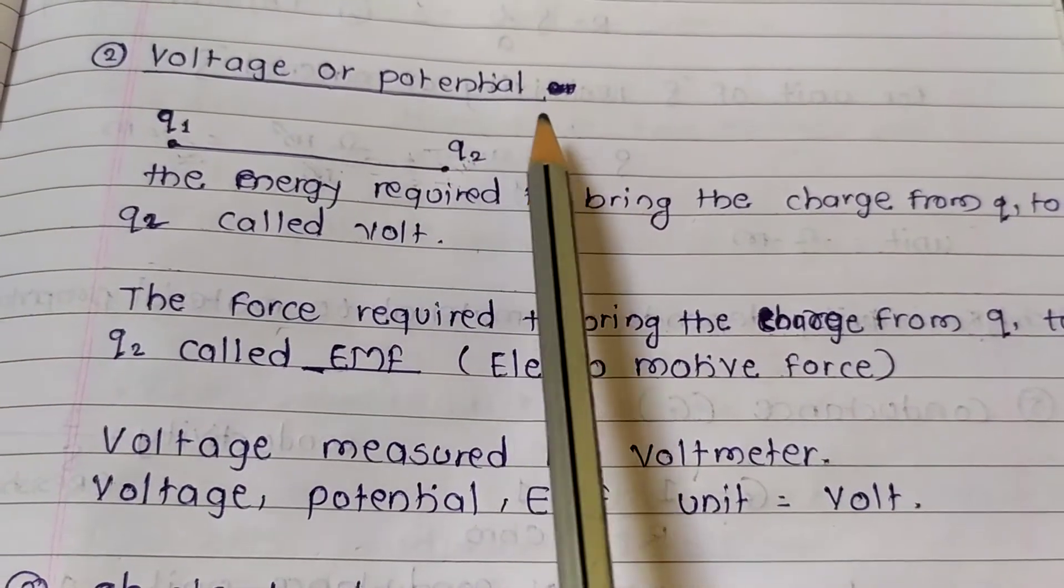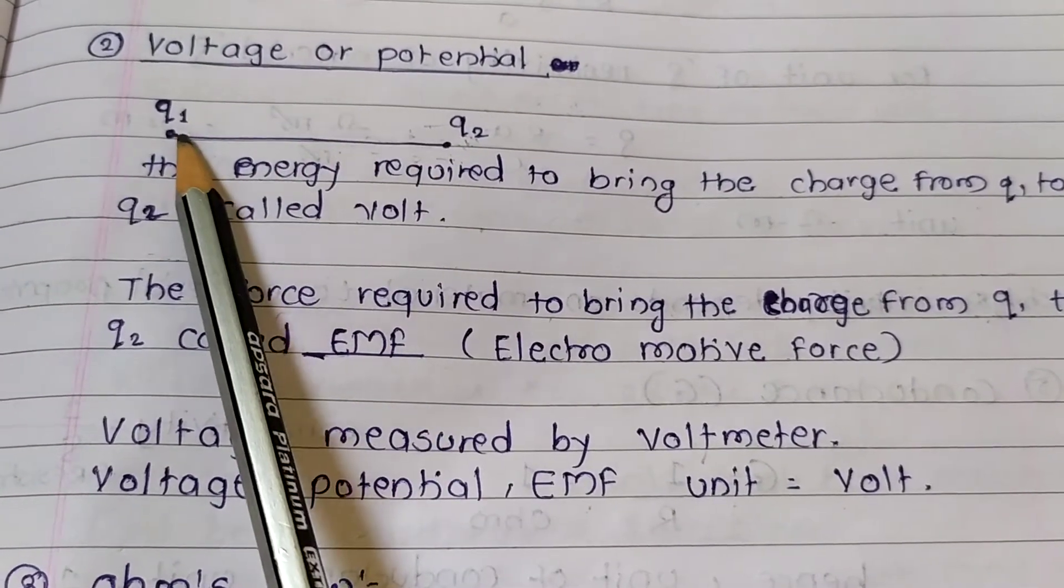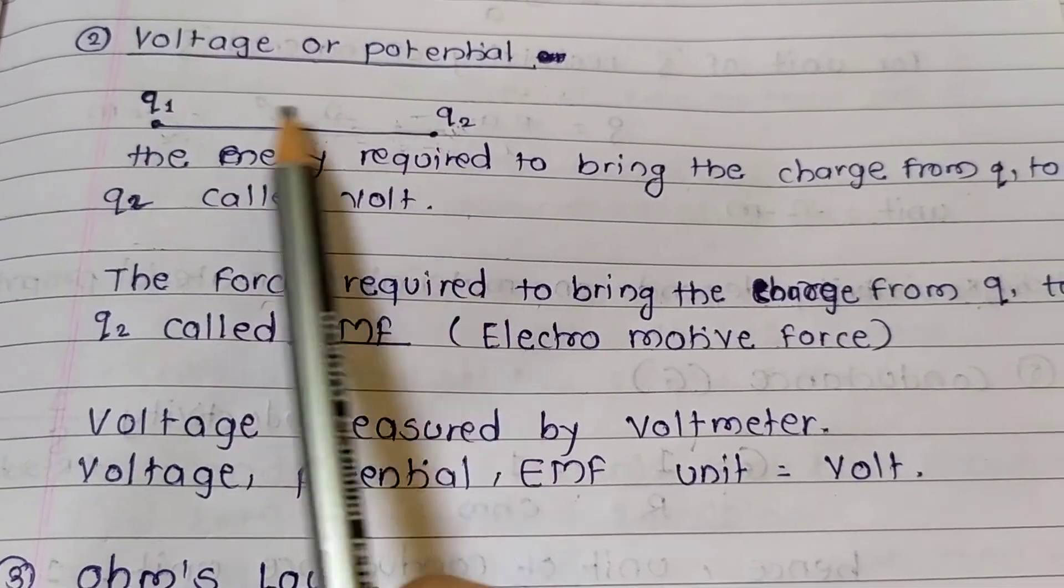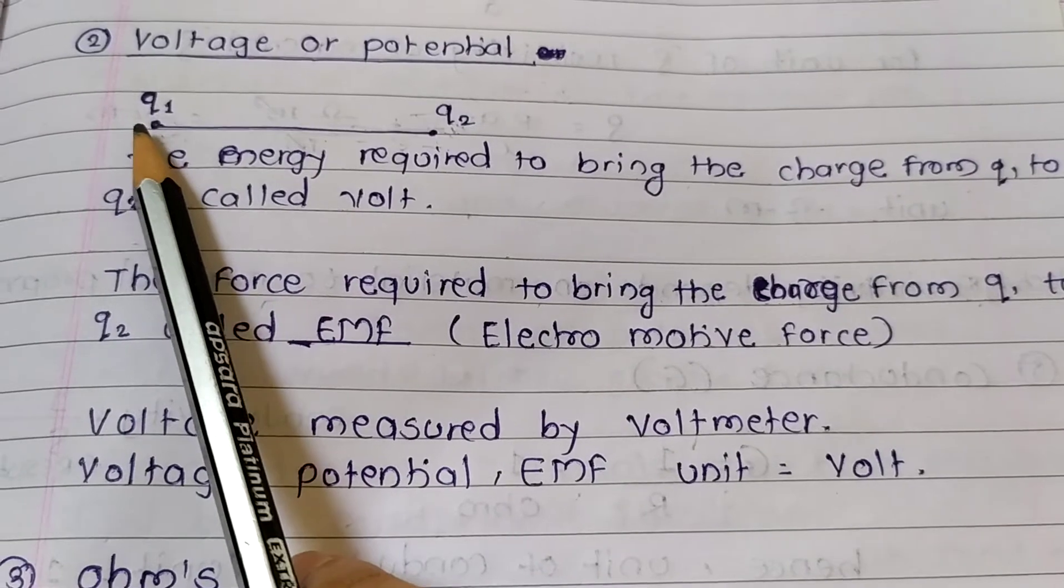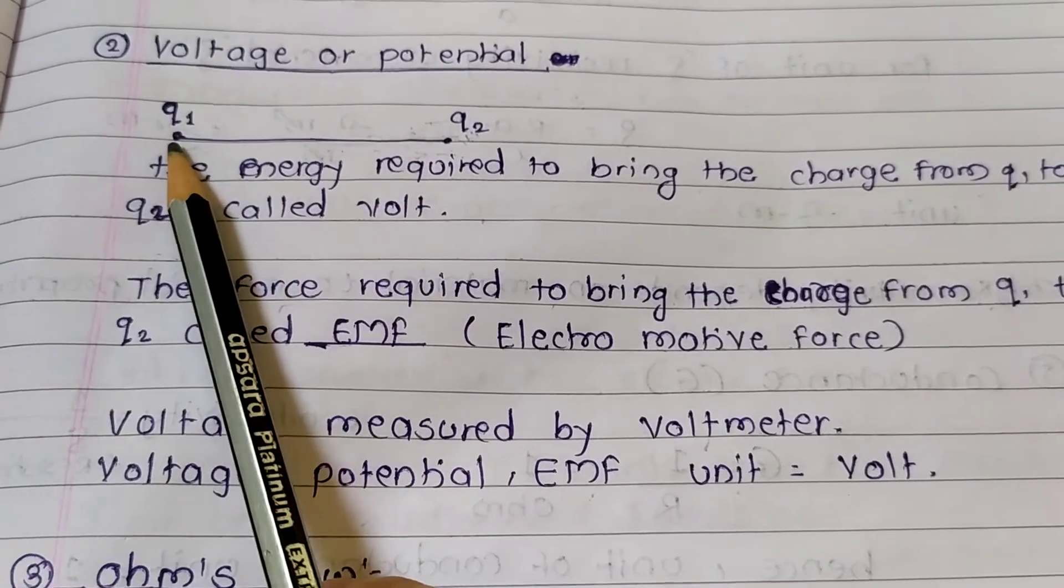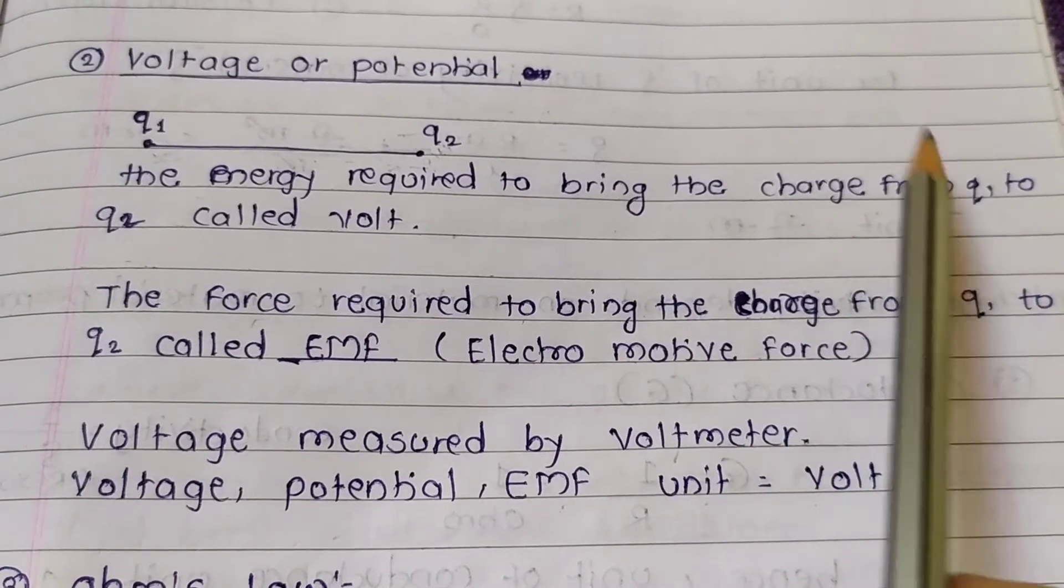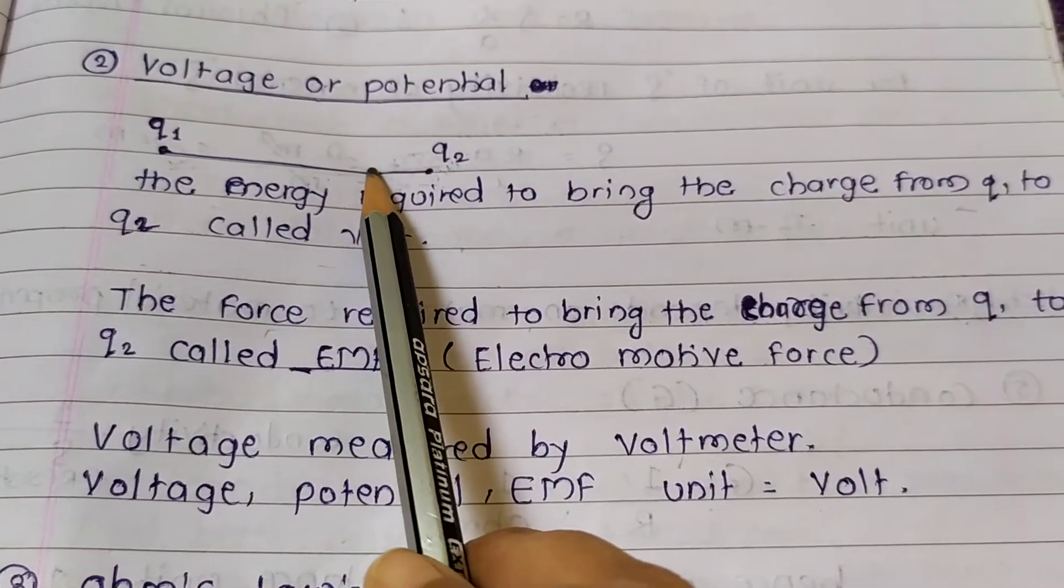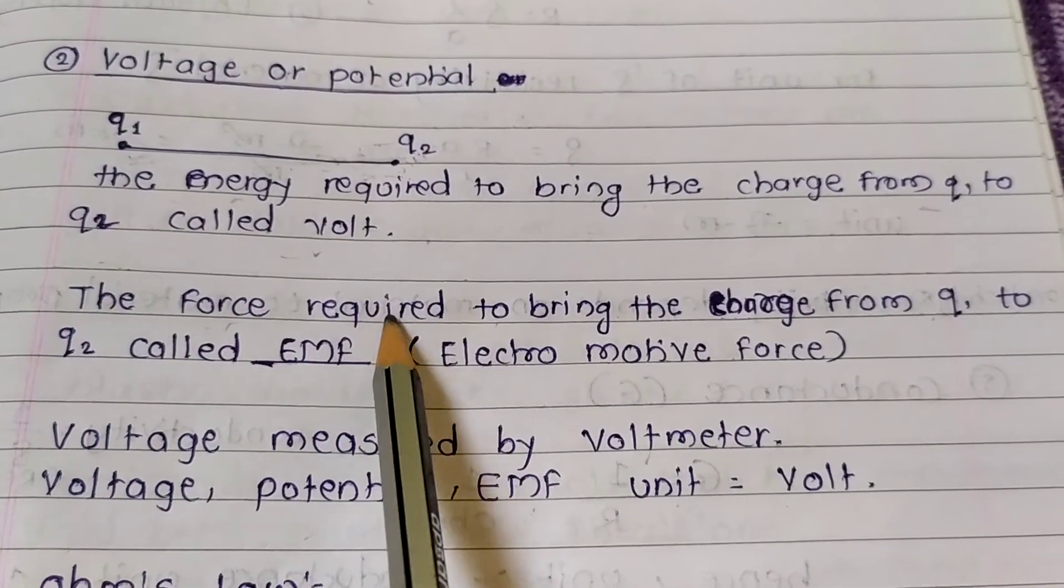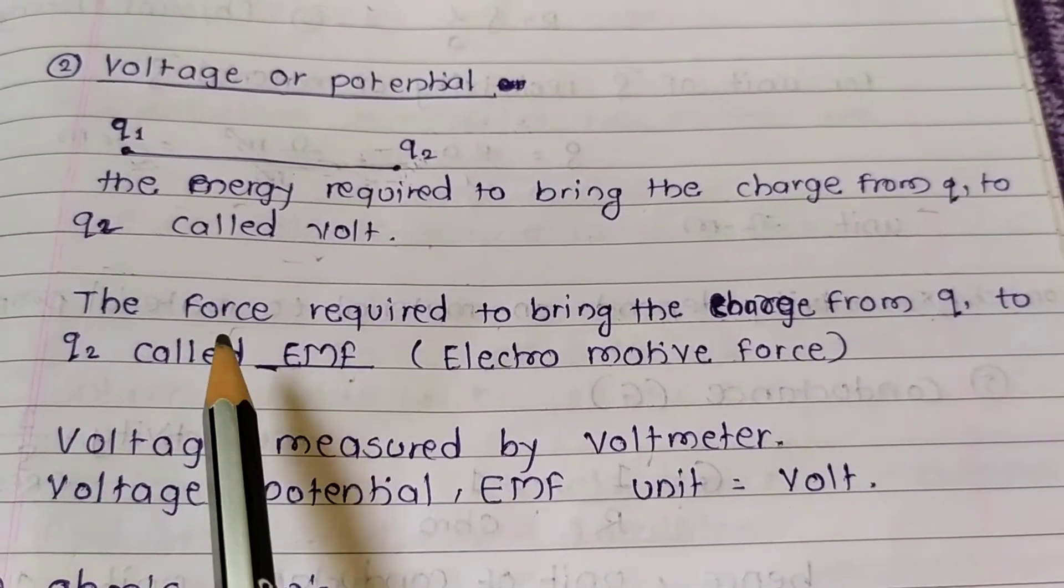Voltage, potential and EMF are the same concept. This is a material and here is charge Q. One point and second point. The energy required to bring the charge from Q1 to Q2 is called volt. The force required to bring charge from Q1 to Q2 is called EMF, electromotive force.